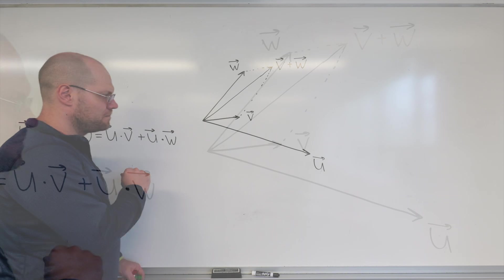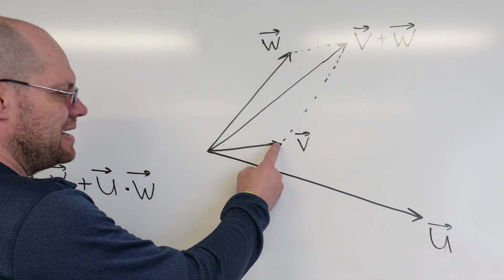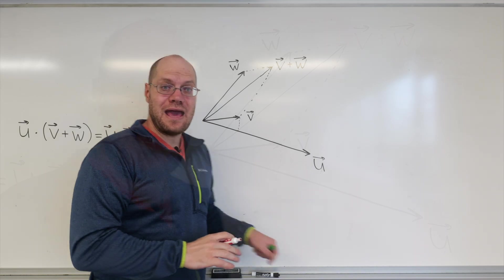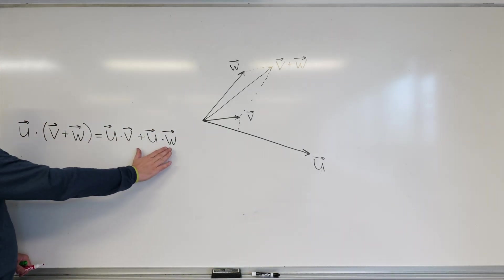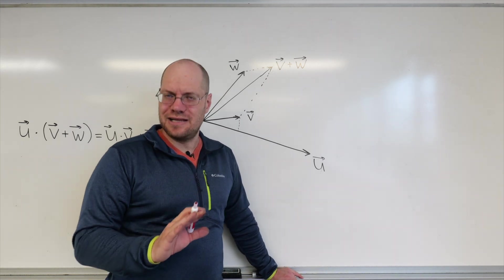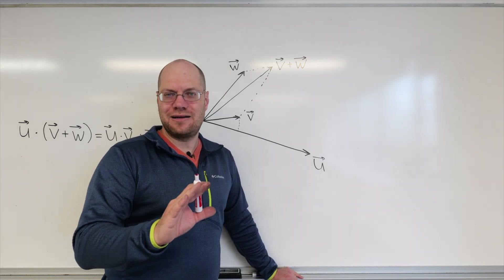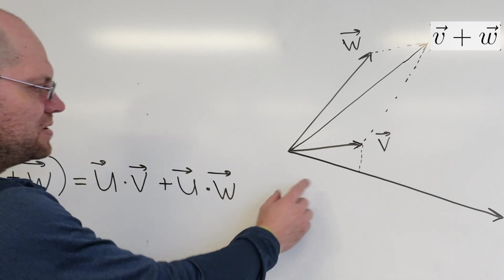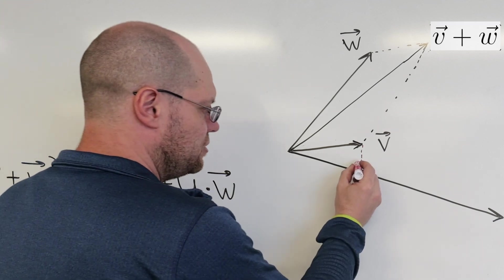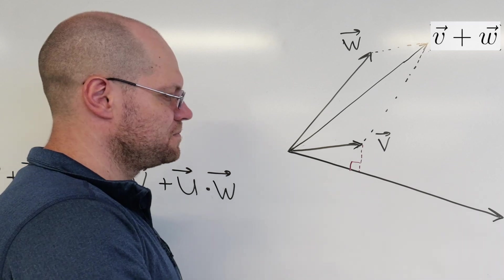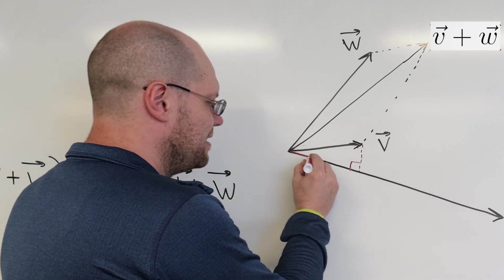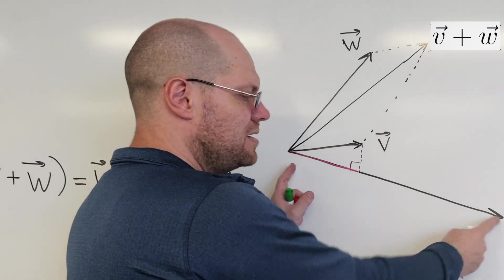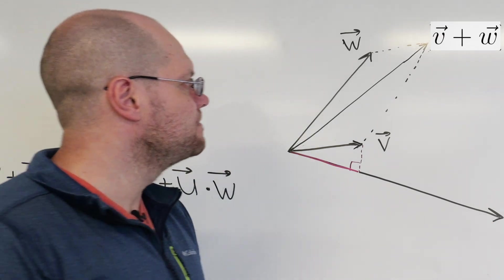So let's look at U dotted with V. U dotted with V, if you recall, is the length of the projection of V onto U times the length of U. And if you will notice, each one of the dot products here has the length of U in it. So we can just ignore it because every dot product has that factor. So we'll mention it, but that's not the important part.